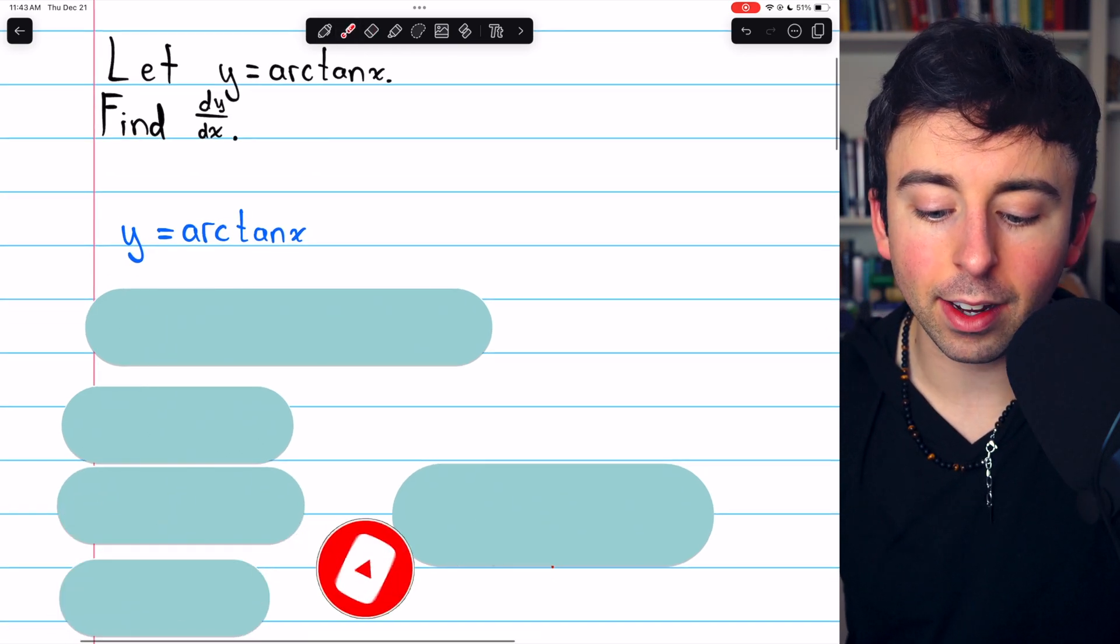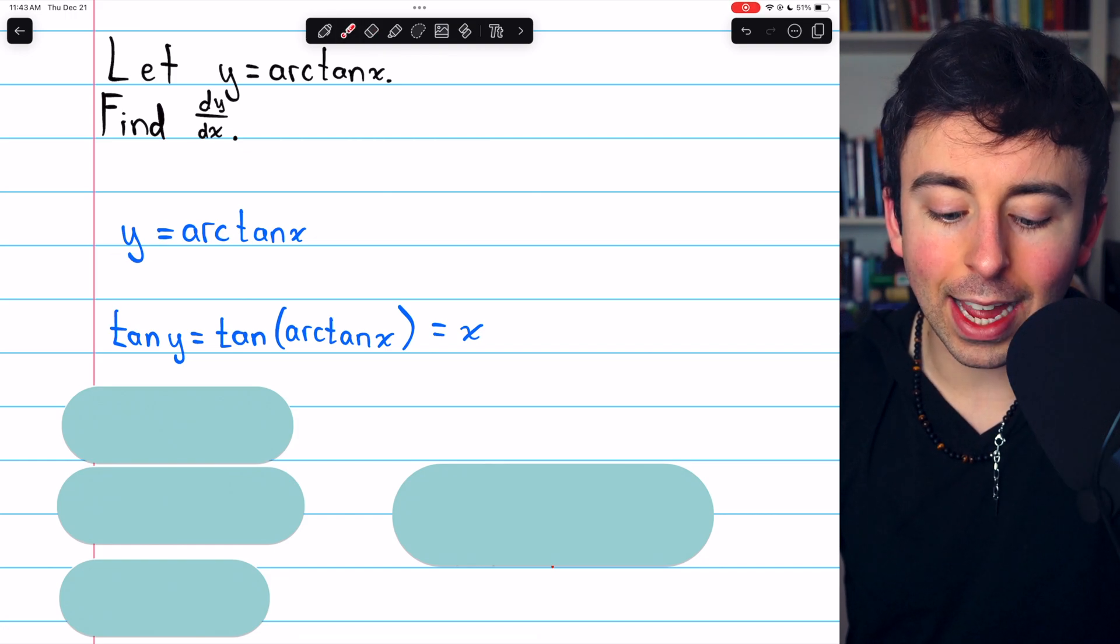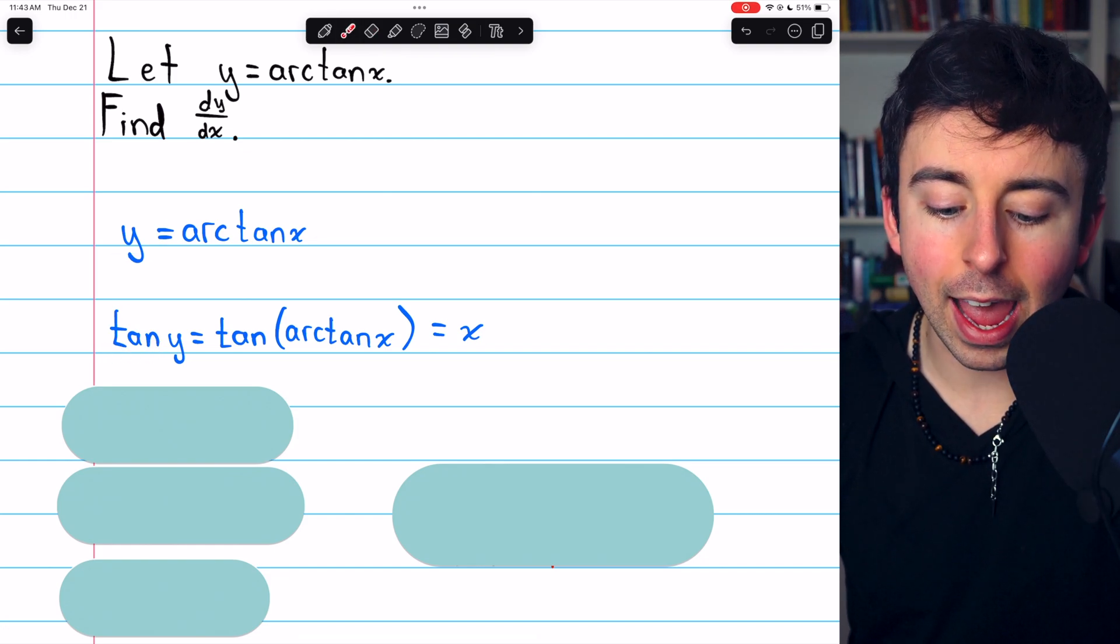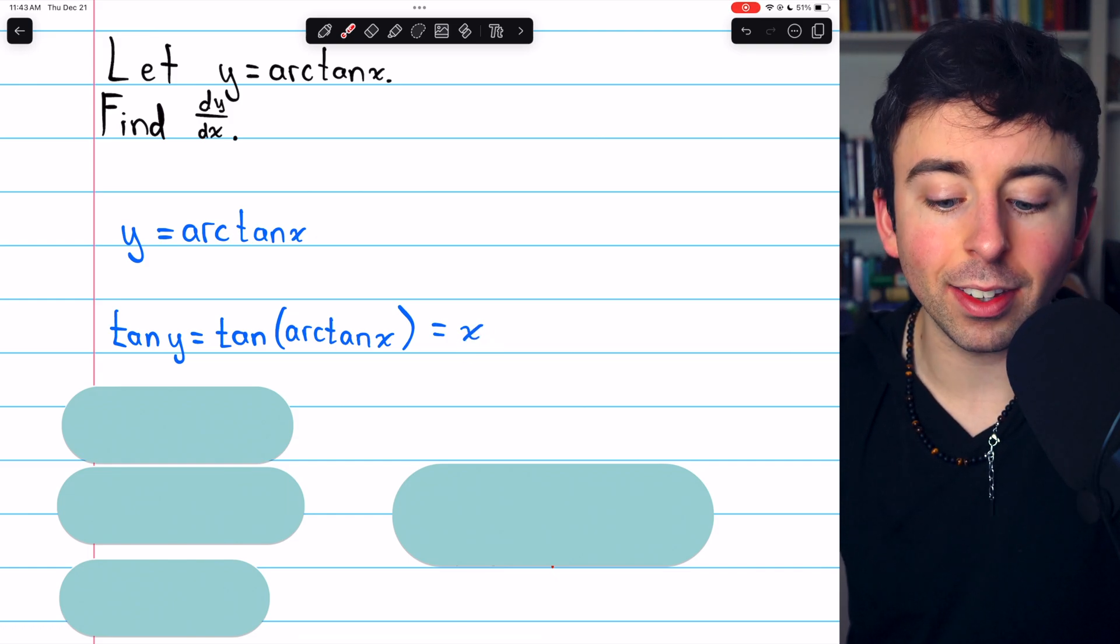If y equals arctan of x, then we can take tangent of both sides of this equation to get tan y on the left, and on the right, tan and arctan cancel out, leaving just x.